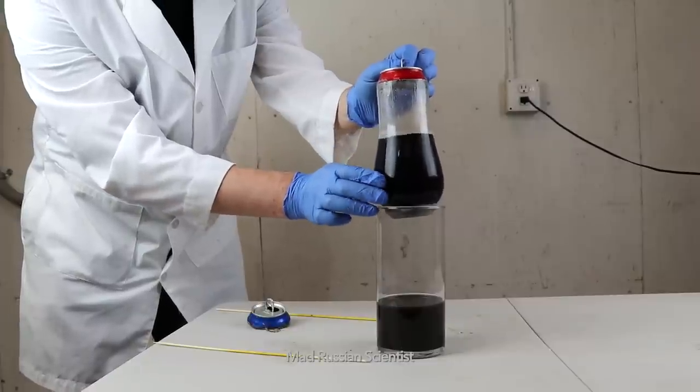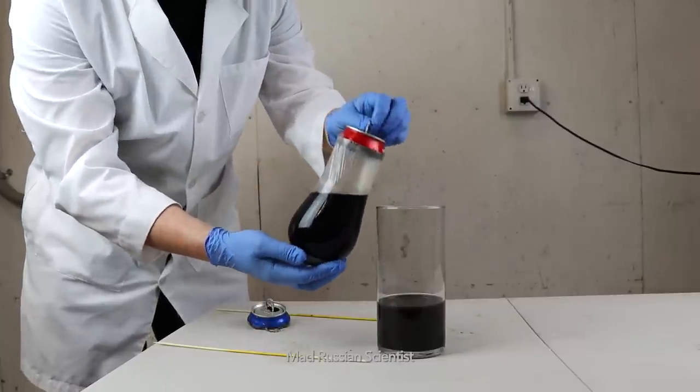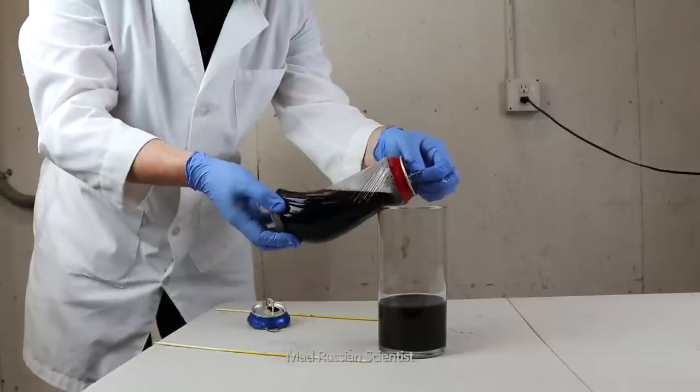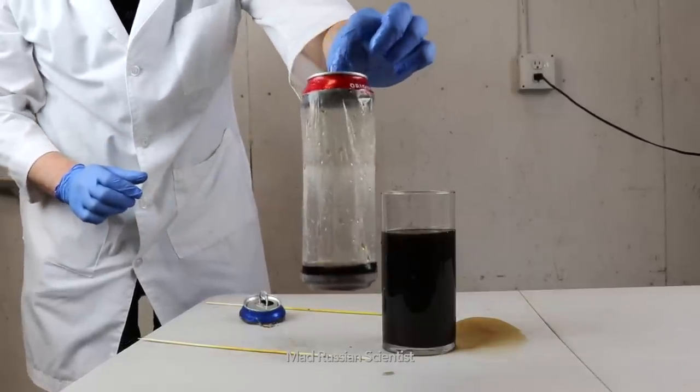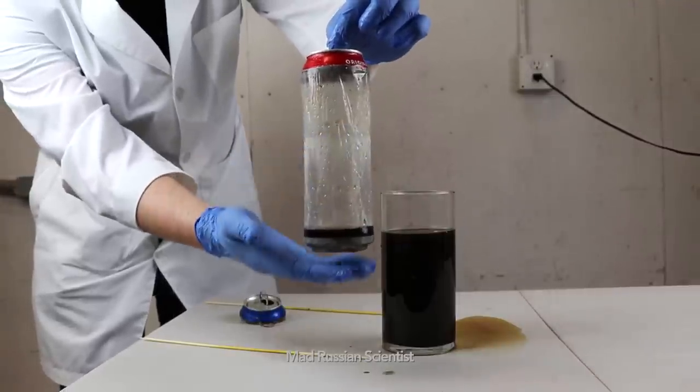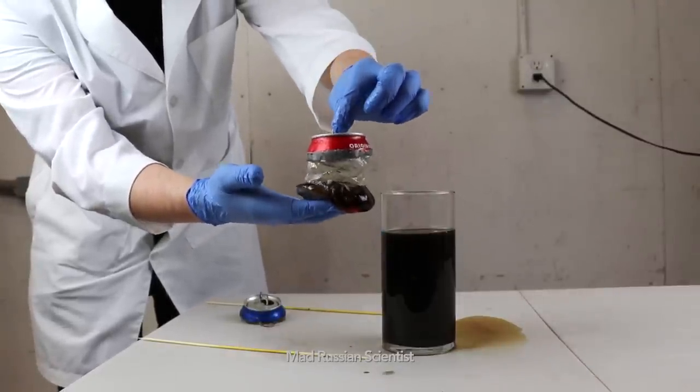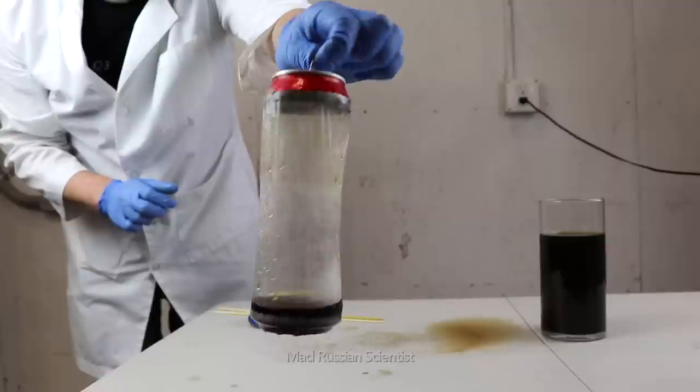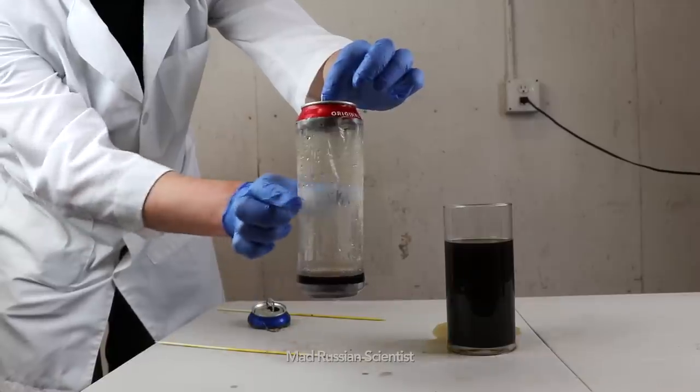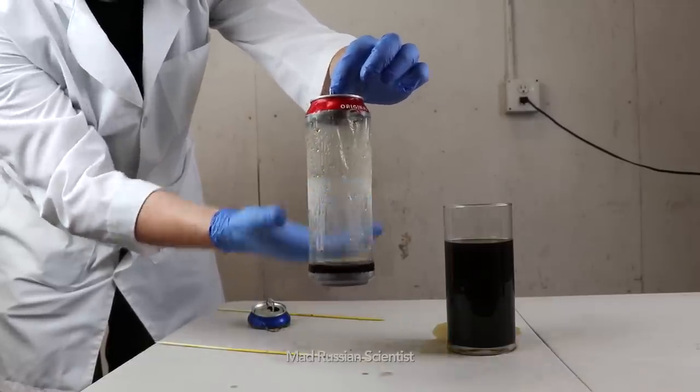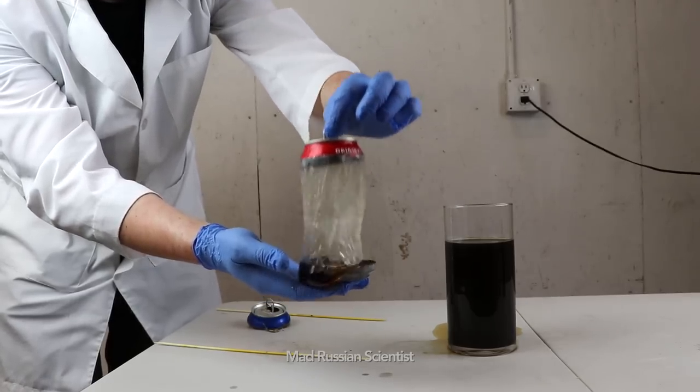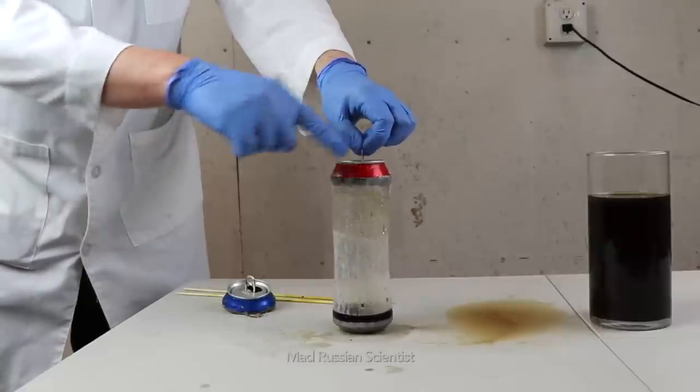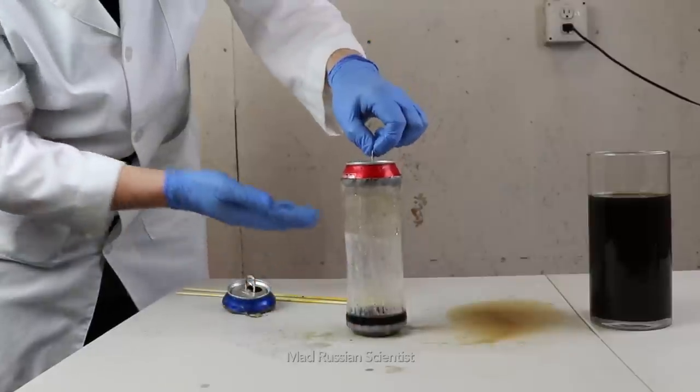That's pretty amazing. Let me see if I can pour in this cup right here without breaking. Check this out. The first layer of the can is the plastic. That's pretty cool. Look at this. So the drain cleaner dissolves the aluminum and only plastic left.